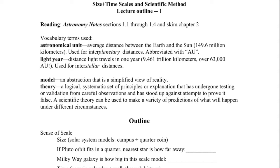The astronomical unit is the yardstick we use for the solar system, and the light year is the yardstick we use for the stars and galaxies. Note how much bigger the light year is than an astronomical unit. Our solar system is tiny compared to interstellar distances.